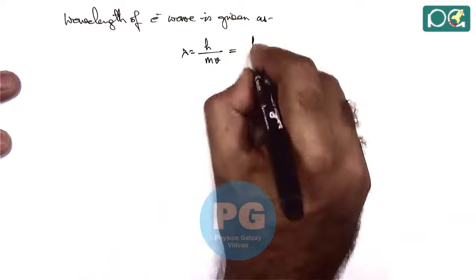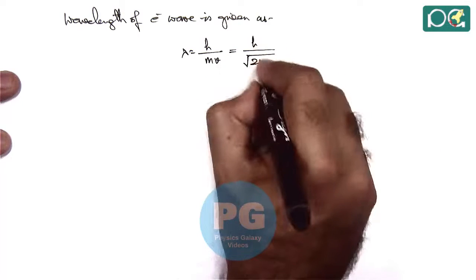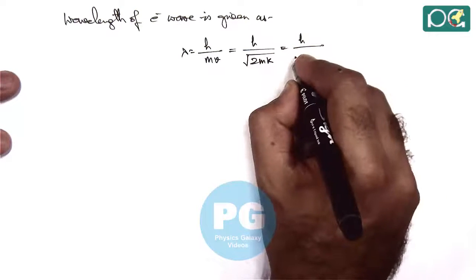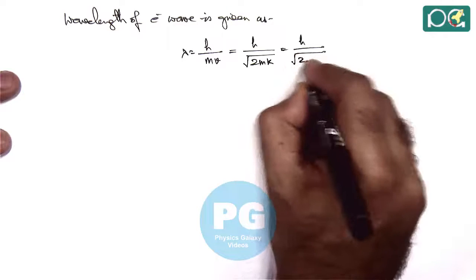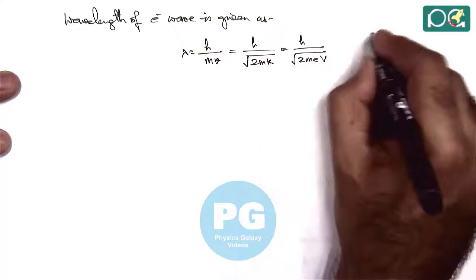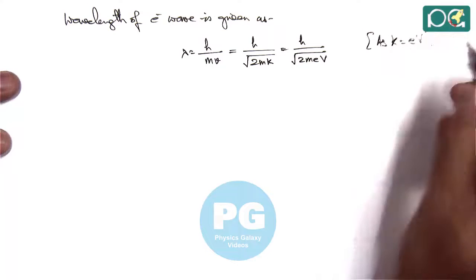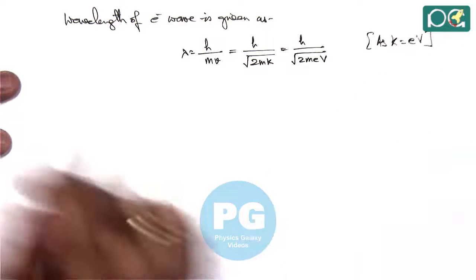Which we can write as H over root of 2MK. And the kinetic energy of electron beam which is accelerated by potential difference V is 2MEV. Here we can write kinetic energy is EV because the electron beam is accelerated with the potential difference V.